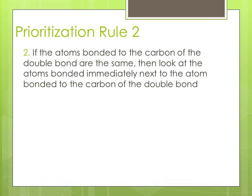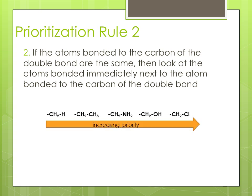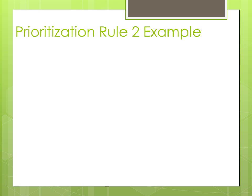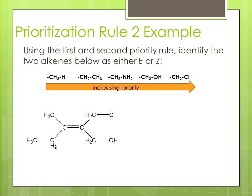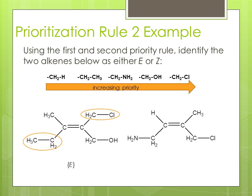Prioritization Rule 2. If the atoms bonded to the carbon of the double bond are the same, then look at the atom bonded immediately next to the atom bonded to the carbon of the double bond. Here is a short graphic to explain this further. Look at this organic molecule. Which configuration would you designate it, E or Z? Remember to use the existing priority rules. These two substituents have the highest priority, designating this molecule as an E configuration. Look at this organic molecule. These two substituents have the highest priority, based on the priority rules, designating this molecule as a Z configuration.